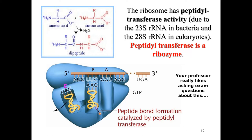Your ribosome has what's known as peptidyl transferase activity, because of your 23S and 28S rRNA in the large subunit. Both of those allow for the formation of peptide bonds. Those peptide bonds are formed by peptidyl transferase, which is what's called a ribozyme — RNA molecules that function as enzymes. Its enzymatic property is the formation of peptide bonds between the amino acids being brought in by your tRNA.